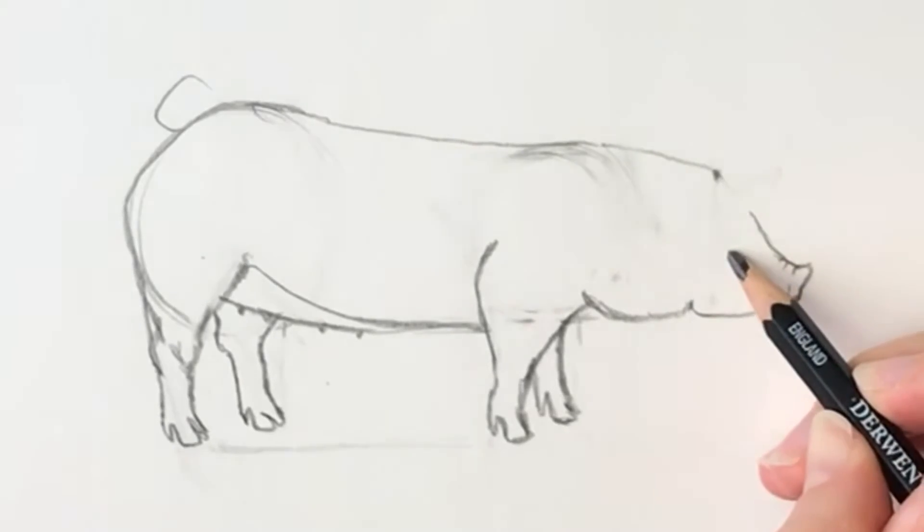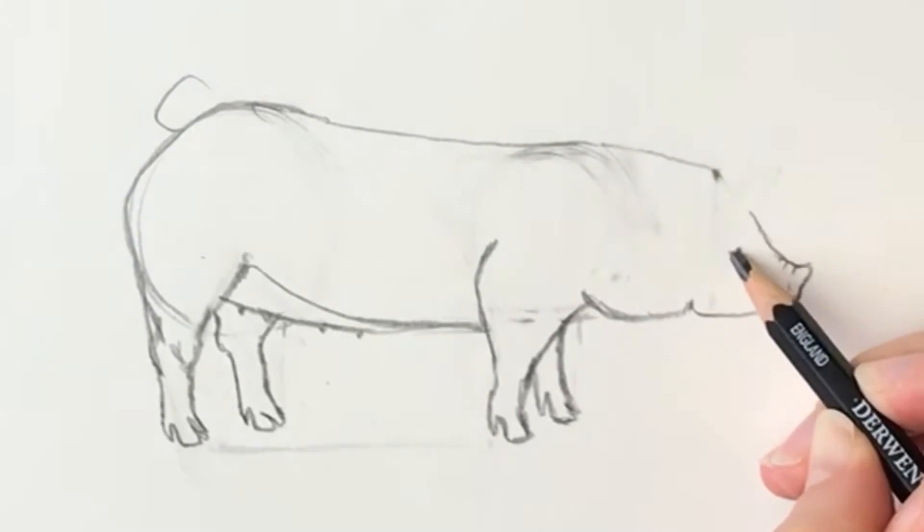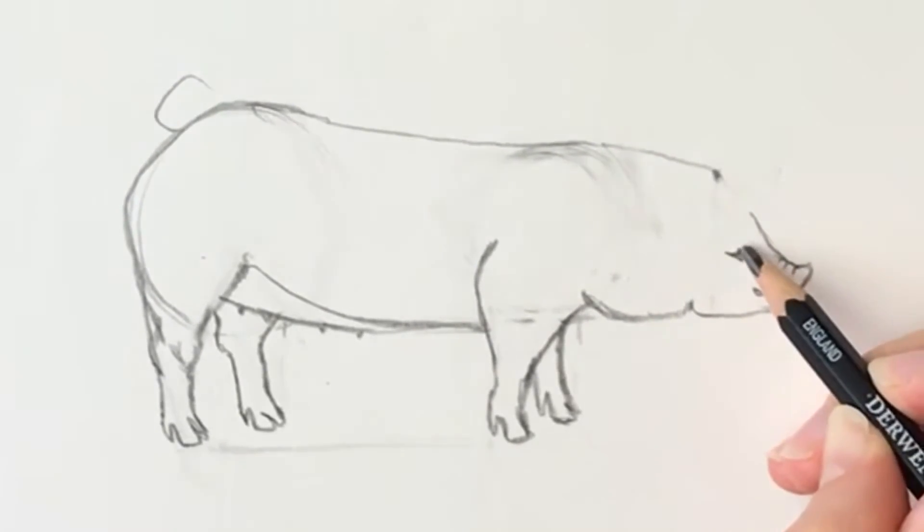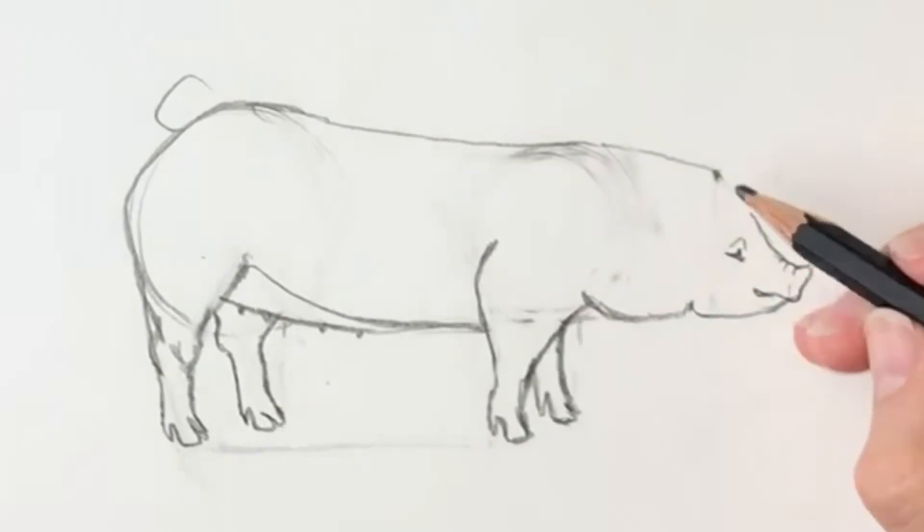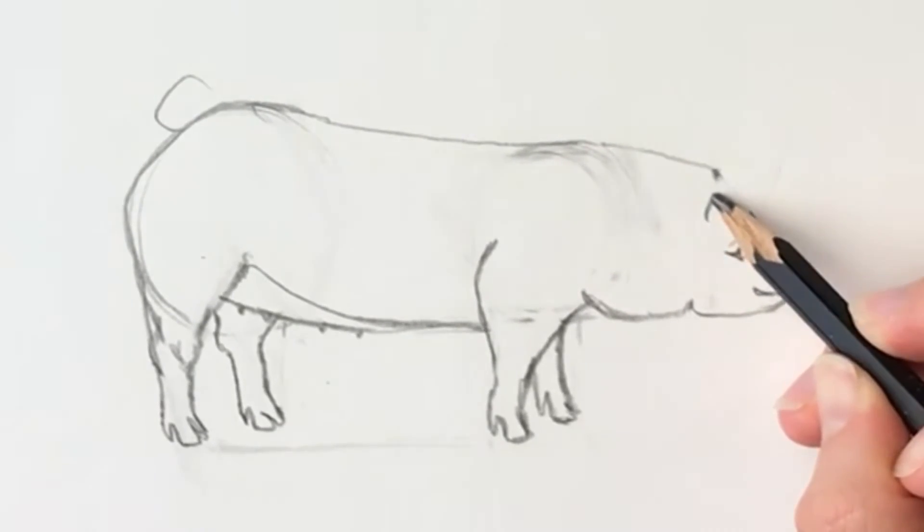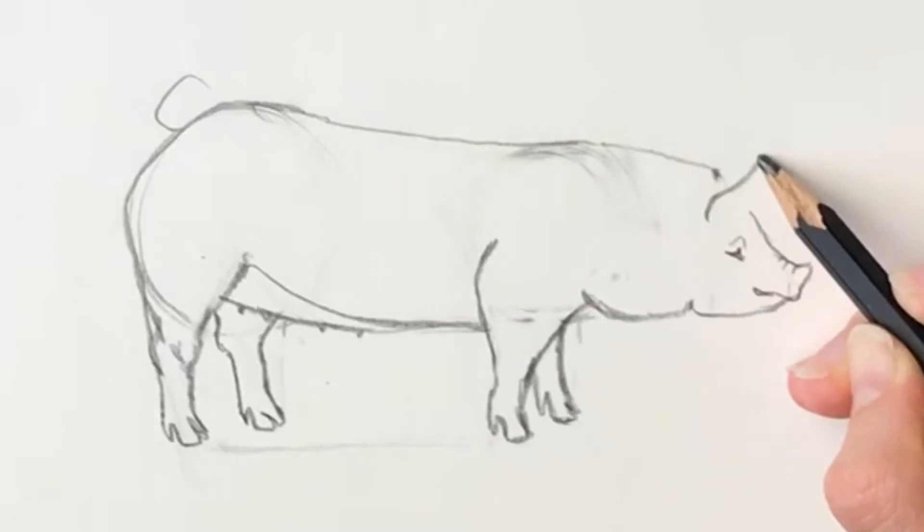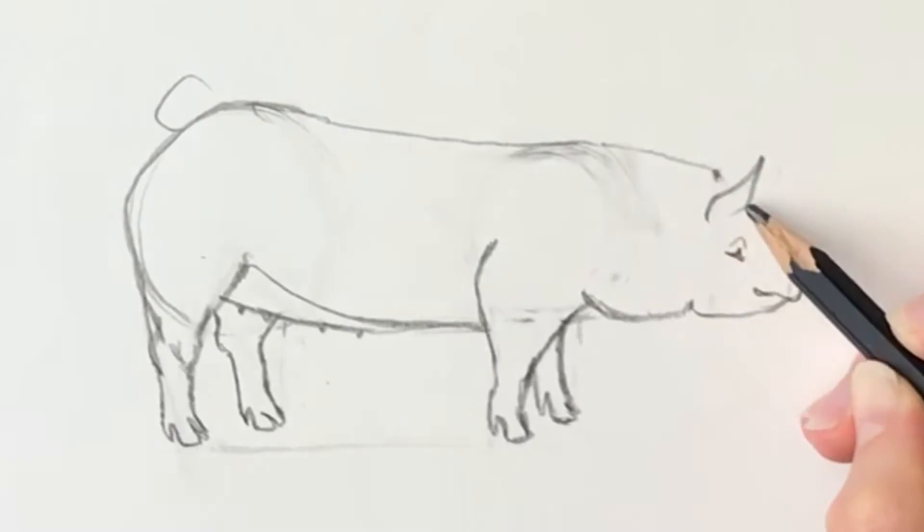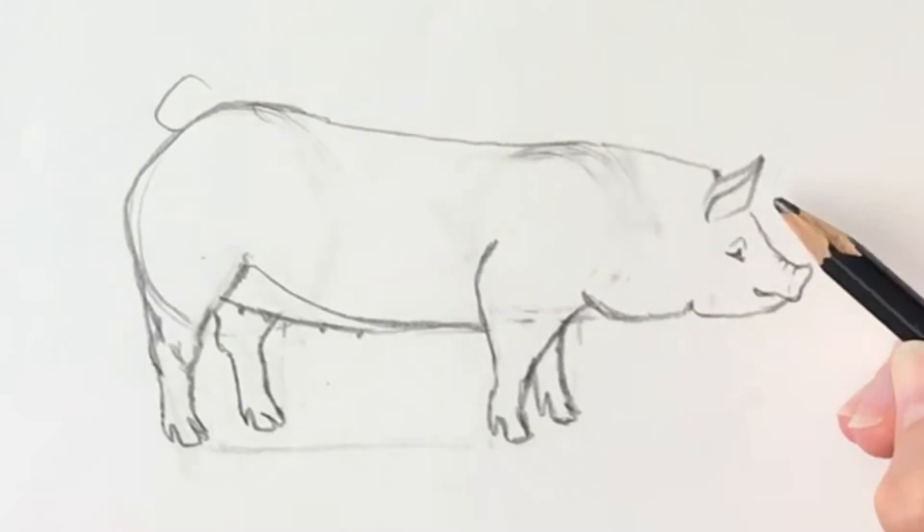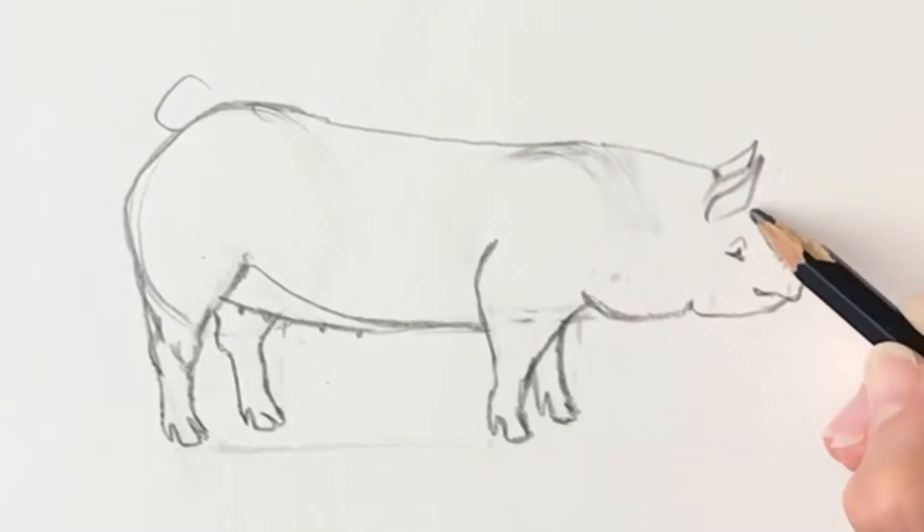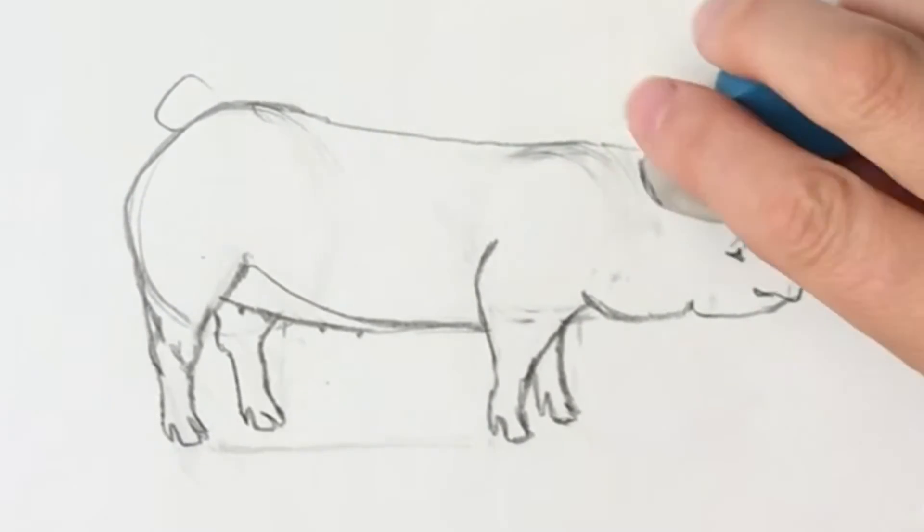And then we've got the eye here. Just like that. We're going to be drawing in the ears. So some nice big ears here. The back of the ear. And then the one on the other side. Just like that. And we're almost done.